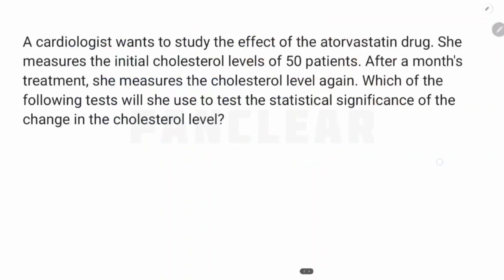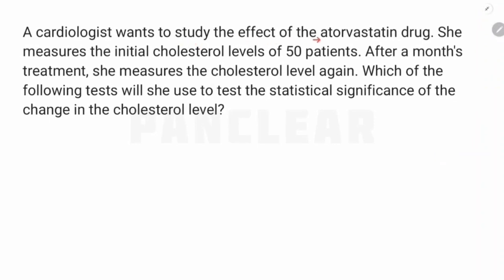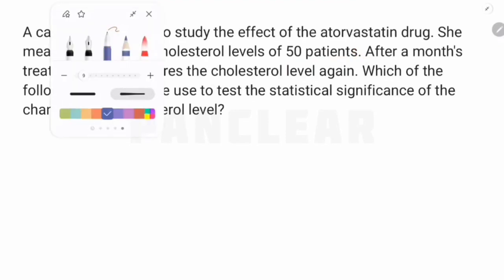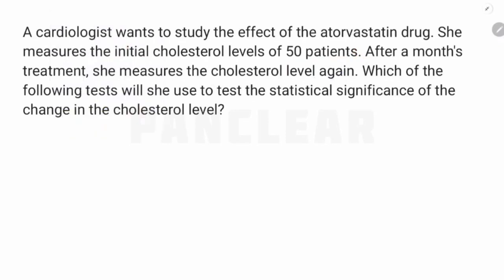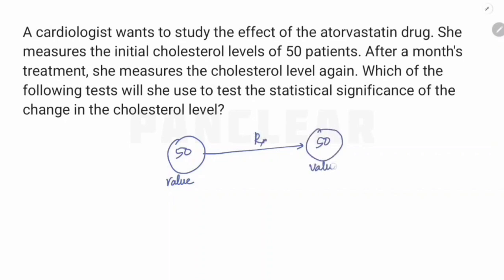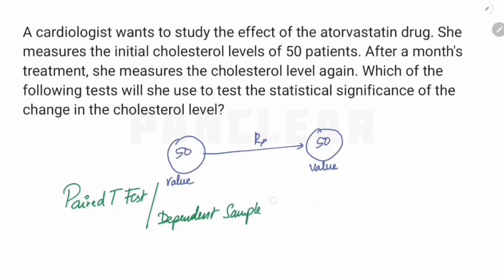Let's look at MCQs. A cardiologist wants to study the effect of atorvastatin. She measures the initial cholesterol levels of 50 patients, and after a month of treatment she measures the cholesterol level again. Cholesterol is a numerical value. We are comparing pre-treatment and post-treatment cholesterol values within the same group, so we use the paired t-test, also called the dependent sample t-test. This is an example of a parametric test.